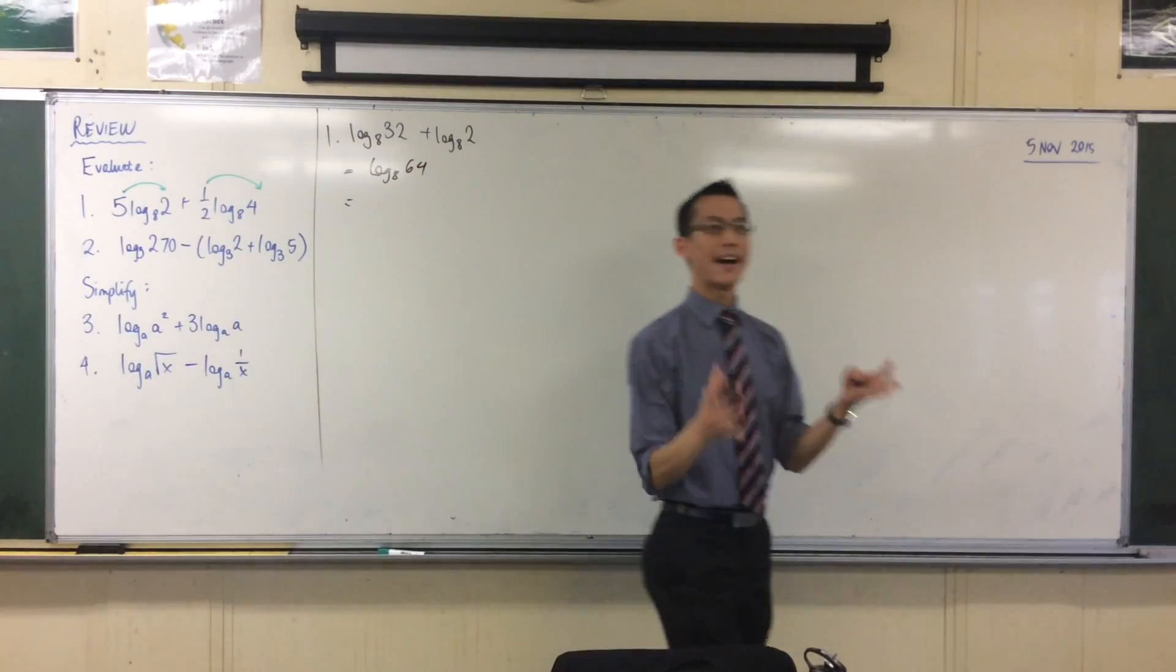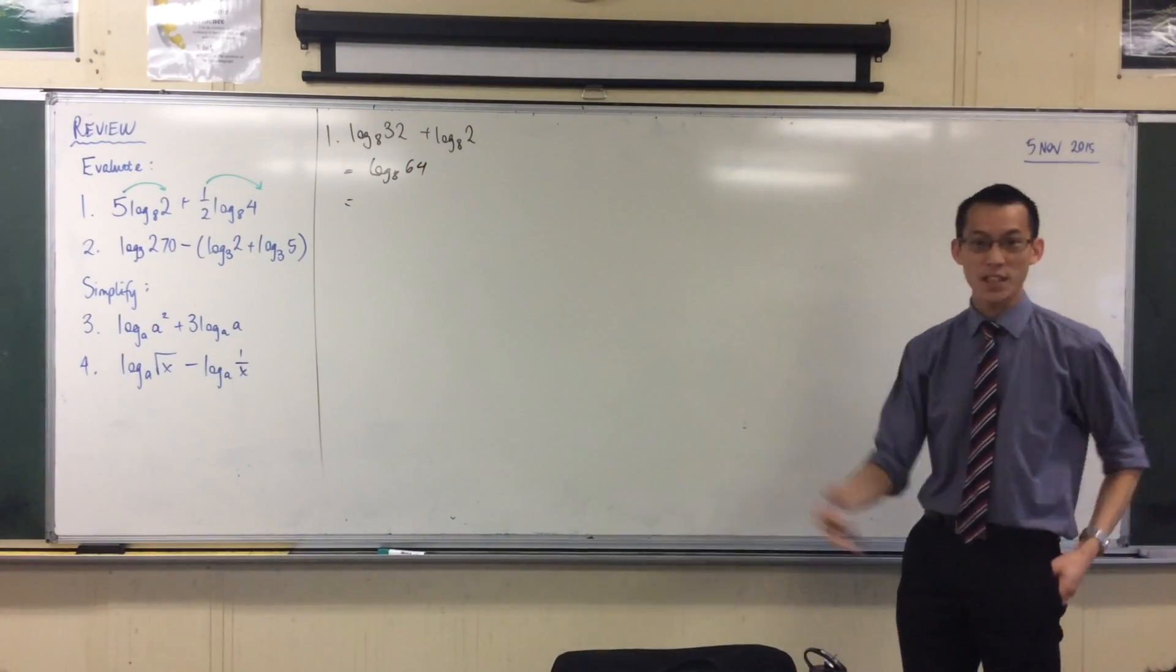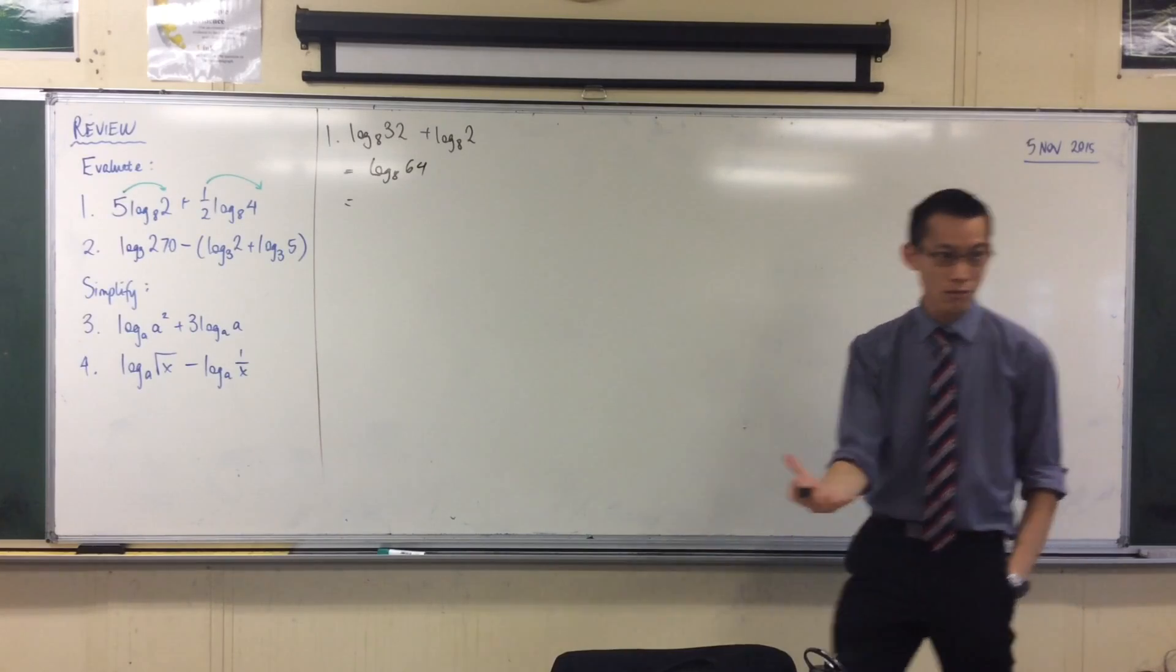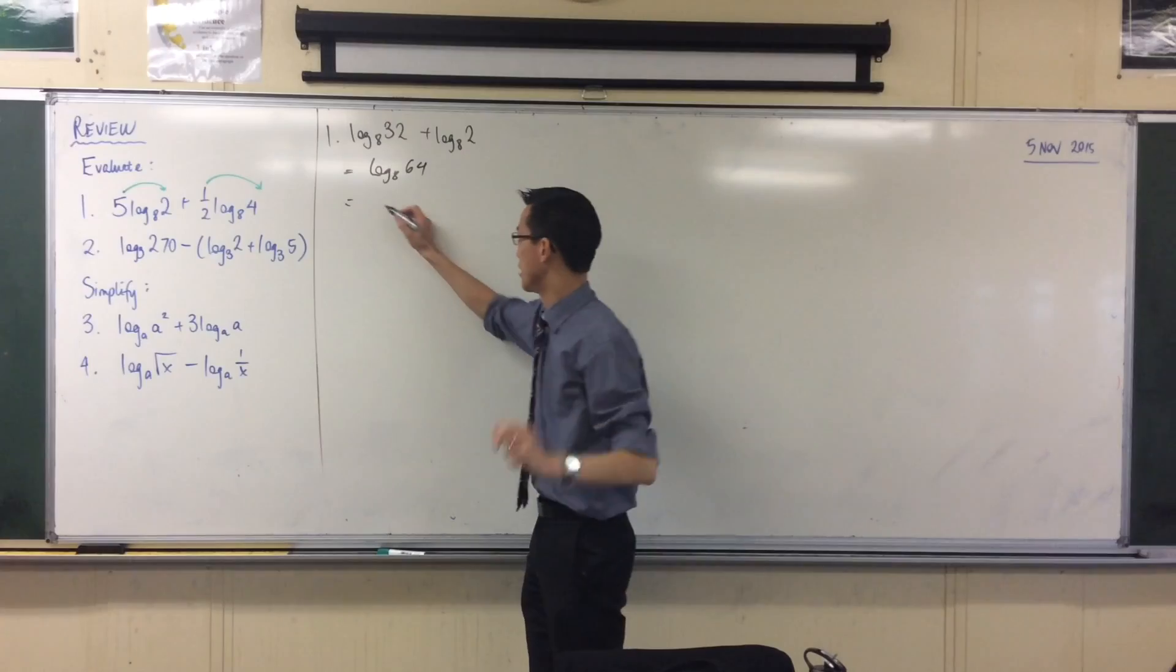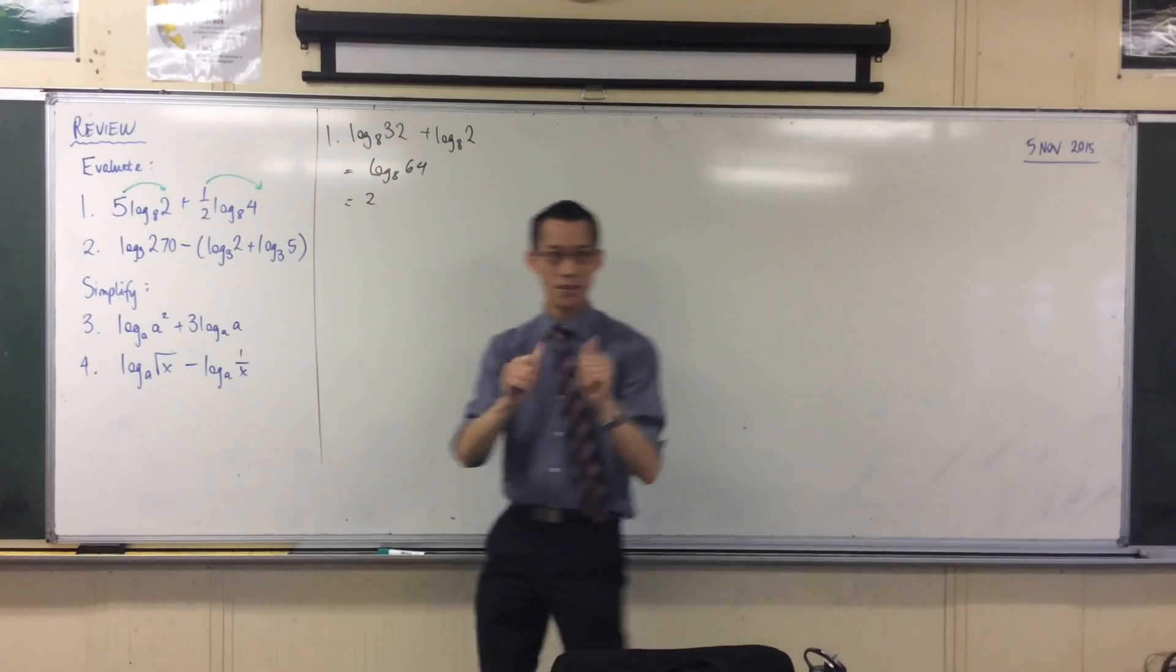And then once you've gotten to this point, everything's folded down into one log, perfect. 8 to the power of something is 64. 8 times 8 will give you 64, but the power I'm interested in is I'm squaring it. So there we go.